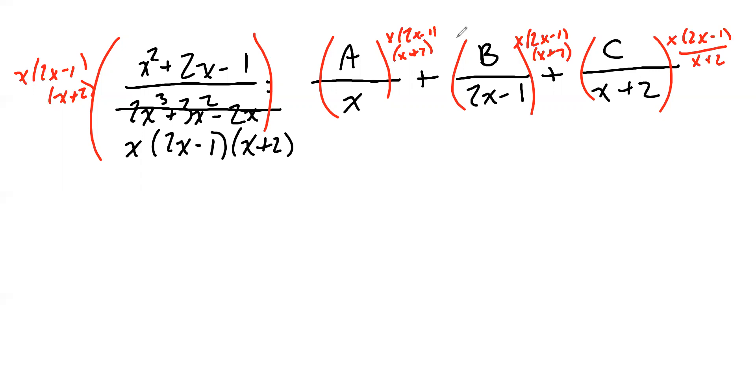On each fraction, there's going to be some cancellations. But by multiplying everything by the original denominator, all the fractions should cancel. In the first fraction, all three factors cancel. And that leaves me with X squared plus 2X minus 1.